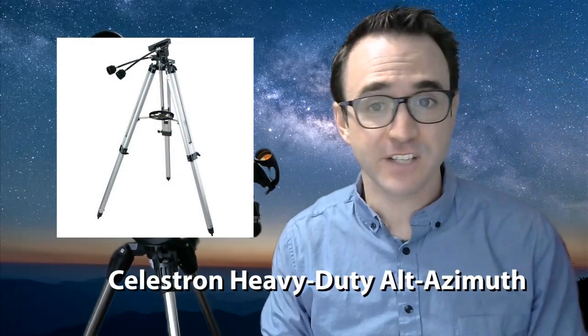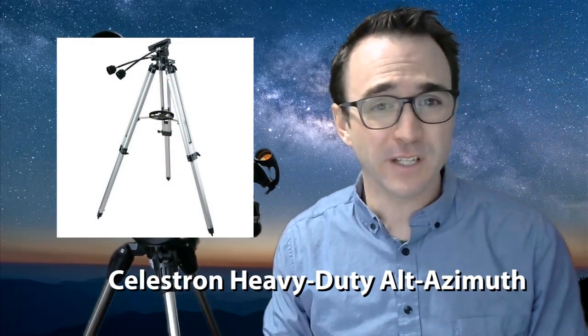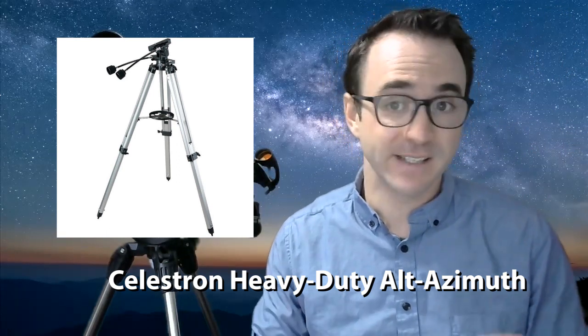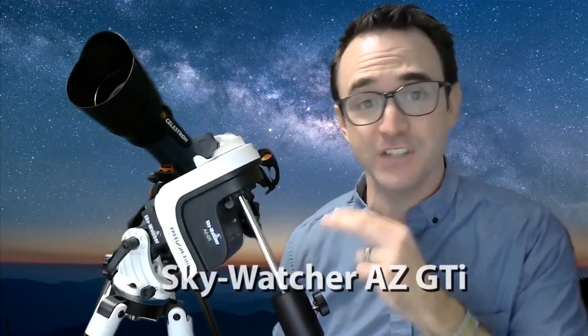The first is the Celestron Alt-Az mount, which can usually be found for less than $100 US dollars. This can be attached to any telescope and offers slow motion controls for precise pointing. The second is another of my favorite astronomy tools, and that's the Skywatcher AZ-GTI mount, which is about $400 US dollars.